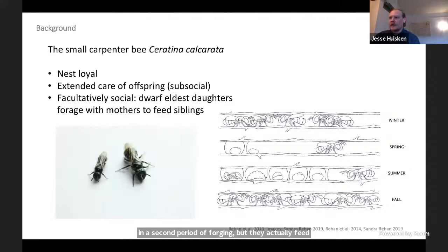They're also facultatively social. Mothers in a subset of nests will produce this smaller, under-provisioned individual, the dwarf eldest daughter, typically in the first cell of the nest. She will emerge in the second foraging season to actually provision her siblings who remain within the nest, foraging with the mother.